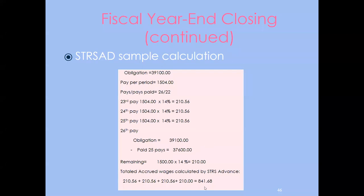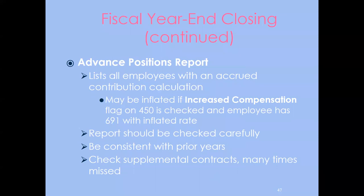The accrued contribution amount calculated for summer months uses pay per period from the compensation record: remaining pays minus one, then the last pay calculation uses the remaining balance. For example, with 26 total pays and 22 paid, the system calculates the 23rd through 25th pays at the regular rate, then takes the remaining amount times 14% for the last pay — resulting in a small rounding difference. The system does all these calculations automatically.